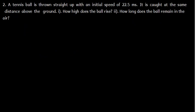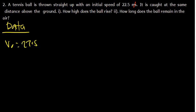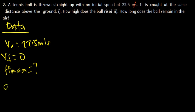The next question: a tennis ball is thrown straight up with an initial speed of 22.5 meters per second. It is caught at the same distance above the ground. How high does the ball rise? We collect the data: initial velocity is 22.5 meters per second. The final velocity at maximum height is zero. Since the ball is thrown straight up, going against gravity, the value of g is negative 9.8 meters per second squared.